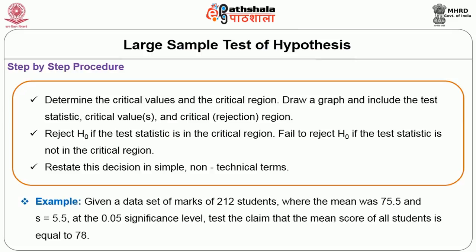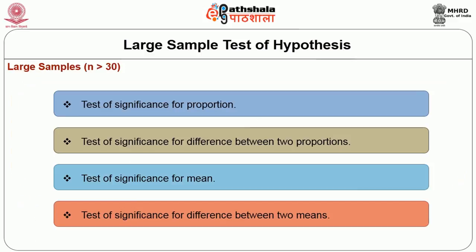Let us look at this example. Given a dataset of marks of 212 students where the mean was 75.5 and the standard deviation is 5.5, at the 5% significance level, test the claim that the mean score of all students is equal to 78. Since the sample size is above 30, we can use the large sample test. Large sample test is carried out when n is greater than 30.